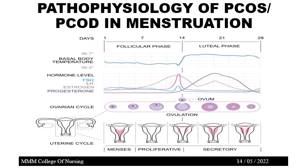Now we will see about the pathophysiology of PCOS or PCOD in menstruation. Looking at symptoms like basal body temperature, hormonal level, ovarian cycle, and uterine cycle against the days: from day 1 to day 14, there is no change in basal body temperature — it maintains a normal level. But at day 14, there is a slight peak, and the basal body temperature rises from 36 to 36.4 to 36.7 degrees Celsius. Throughout the luteal phase, it maintains this higher basal body temperature.